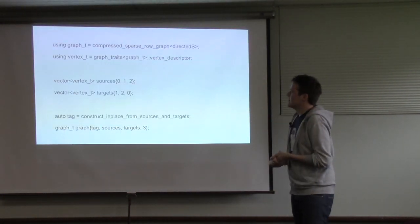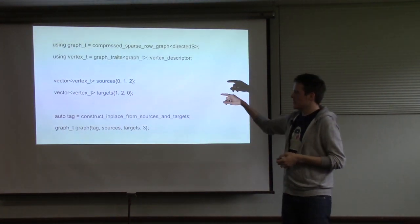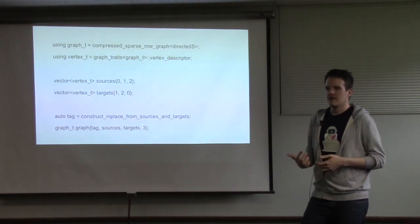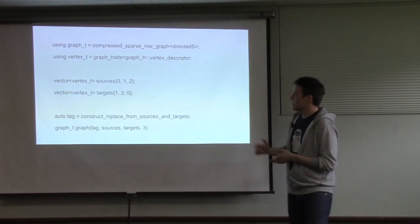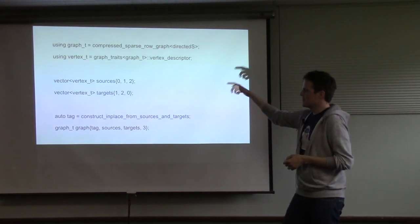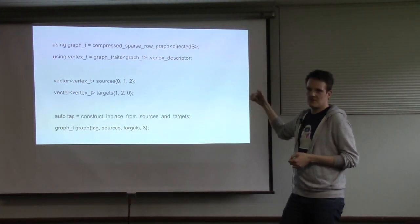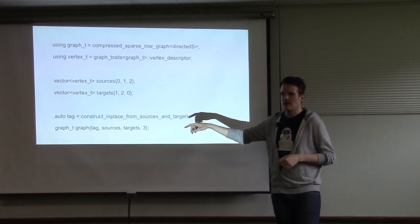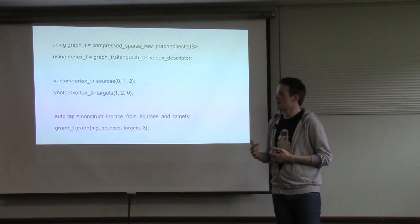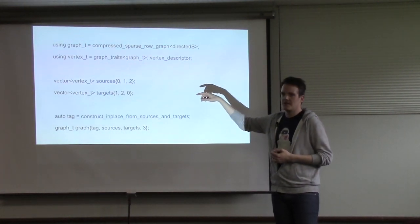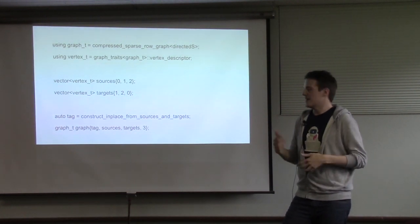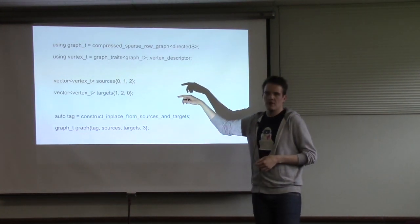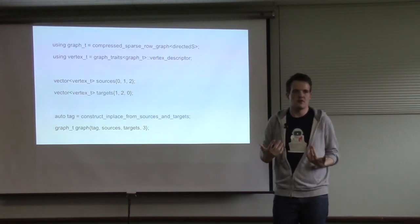In code, you provide your sources and targets upfront — you can't instantiate the graph and then add edges. Instead you provide edges from 0 to 1, 1 to 2, and 2 to 0. Using this tag, you select the appropriate constructor — basically telling the BoostGraph library to modify and sort your vectors by source then target. The tag is a named value in the library; there are different tags depending on whether your edges are already sorted.